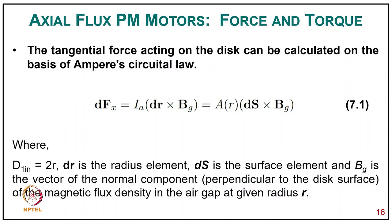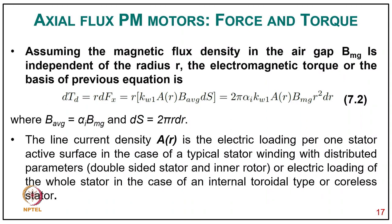Assuming the magnetic flux density in the air gap Bmg is independent of radius r, the electromagnetic torque is dTd = r·dFx = r·(1/2)·kw1·Ar·Bg·dS = π·(1/2)·kw1·Ar·Bg·r²·dr, where B_average = (1/2)·Bmg and dS = 2π·r·dr. The line current density Ar is the electric loading for the stator active surface. In the case of a typical stator winding with distributed parameters, double-sided stator and inner rotor, the electrical loadings of the whole stator apply in the case of an internal total-type cold-ice stator.